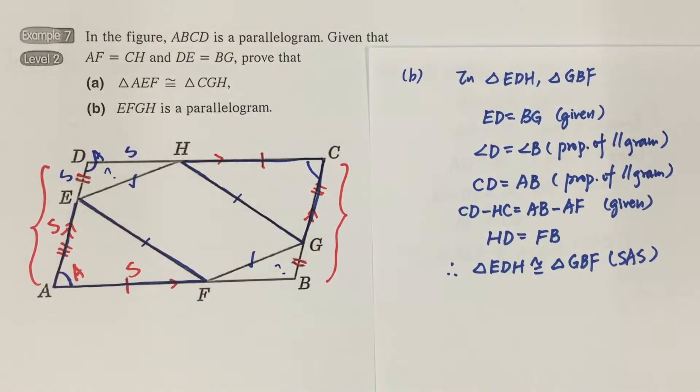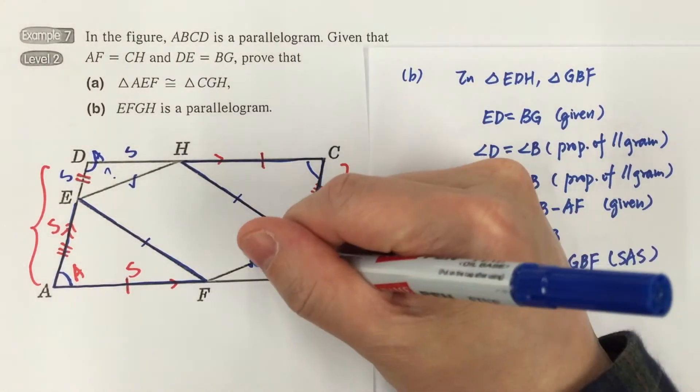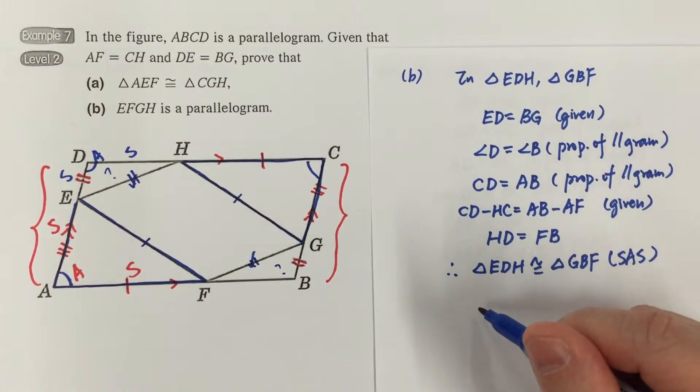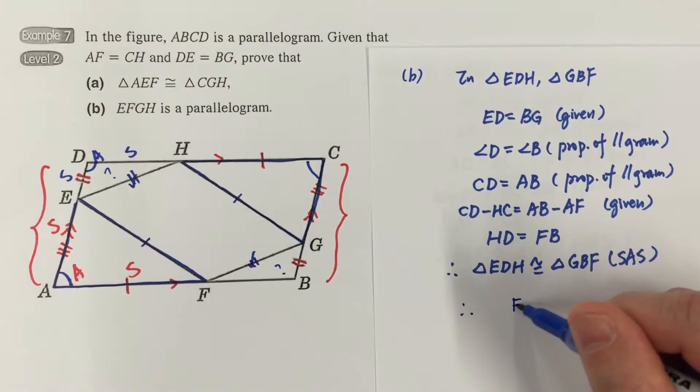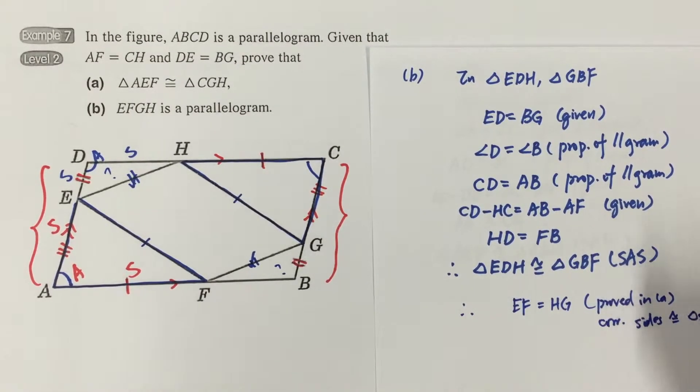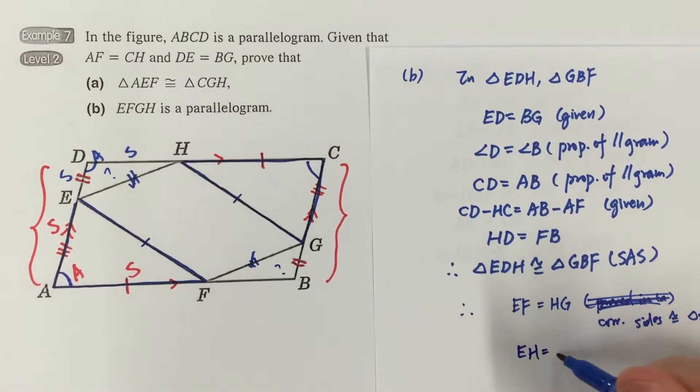And therefore, if we have another pair of congruent triangles, that means these two pairs of sides are also equal to each other. Therefore, EF equals HG, and EH equals FG.